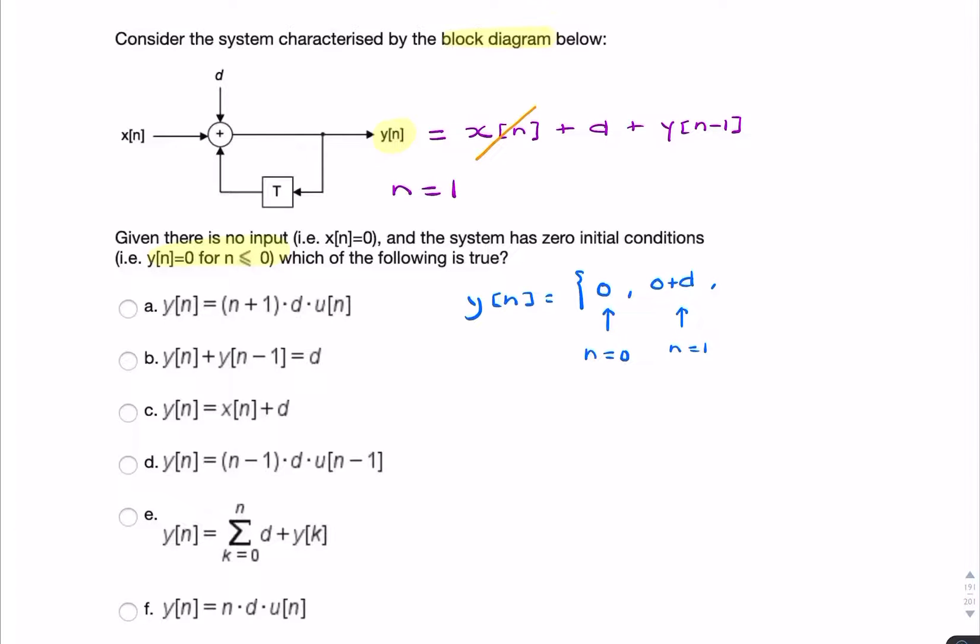When n equals 2, it'll be 0 plus d plus another d, so 0 plus 2d. And so on. So our signal y of n will look like: 0, d, 2d, 3d, 4d.